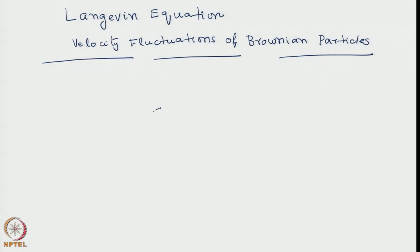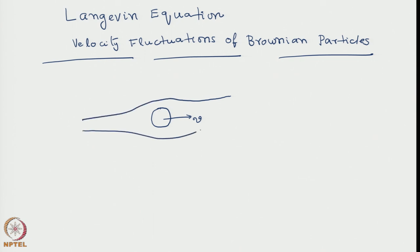Let us consider the case of a Brownian particle which is immersed in a fluid. We have a stationary fluid and a Brownian particle is immersed. Let us say that the Brownian particle is actually a colloidal particle. It has a certain velocity V along the positive x direction. If we sit on the particle and construct the coordinate system on the particle, then it would look like the fluid is moving in the direction of minus V.